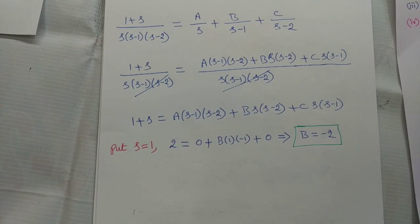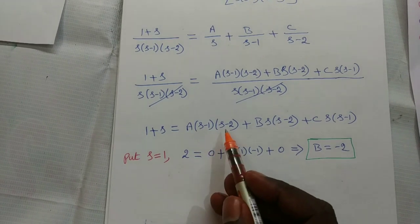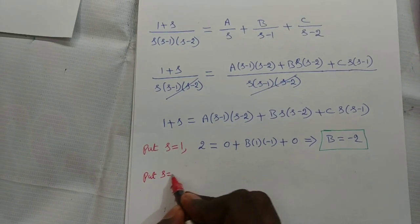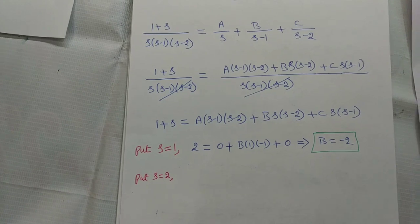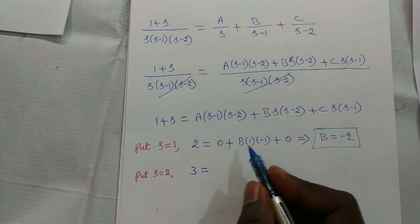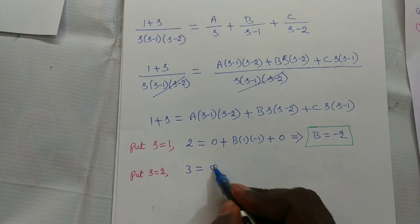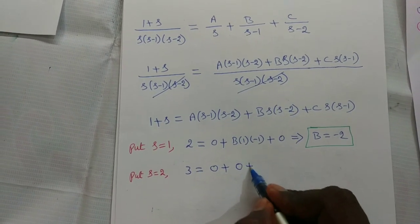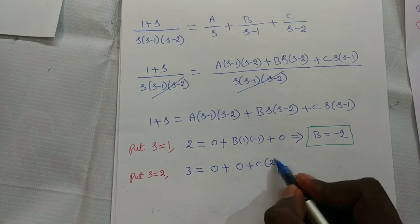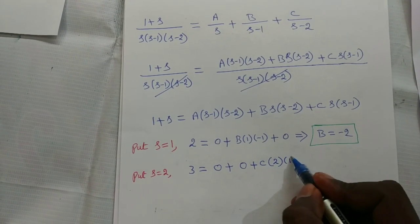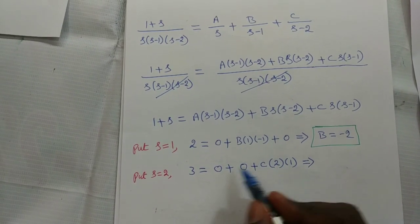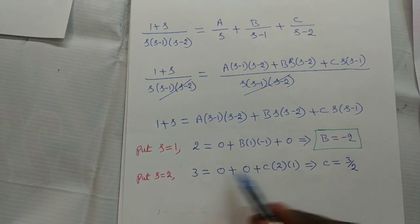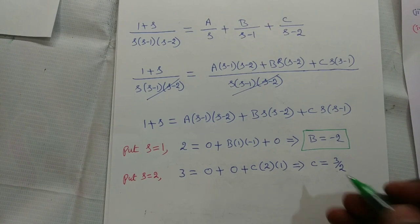Putting s equal to 2: 2 plus 1 equals 3; the A and B terms vanish, giving C times 2 times (2 minus 1) equals 2C equal to 3, therefore C equal to 3 by 2.